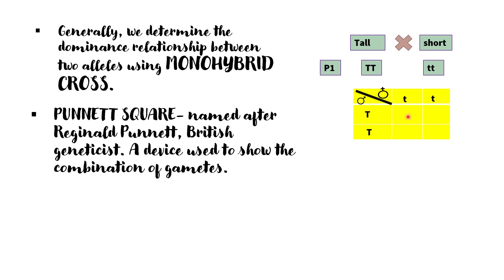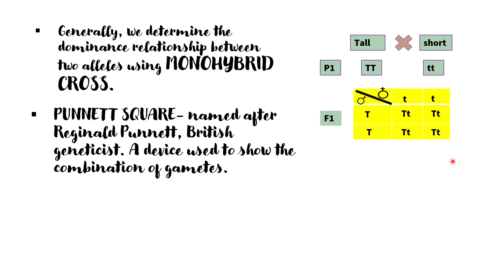The male gametes are T and T, and the female gametes are t and t. The possible combinations in each box of the Punnett square all give us capital T and small t. So this gives us four boxes, all with genotype Tt. These are our F1, or first filial generation, and it is 100% tall.